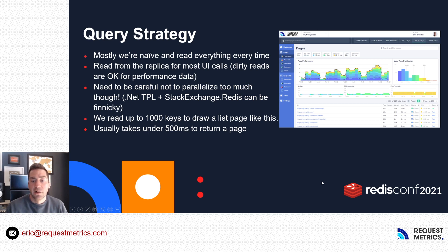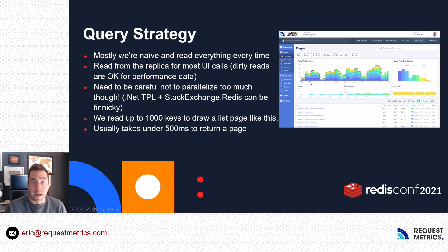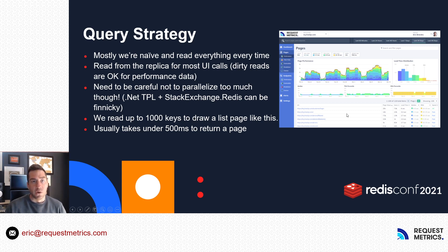When we go to read that data, because we're using Redis, we just read it all every time — we're very naive about how we do it. There's no special querying; we read it all and sort it in the app. Here is a listing page where you can see all of your performance data rolled up into one view of all the pages in your application. To build this page, we might read up to 1,000 keys per request to draw it, but it's really fast. To take pressure off the master, we only read from the replica for a lot of this performance data, because dirty reads are okay. The Redis replication stream is very fast, and at most you're maybe a second or two behind.